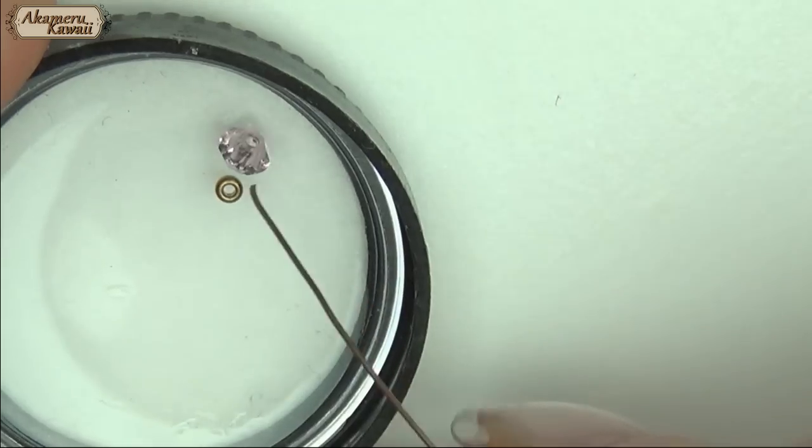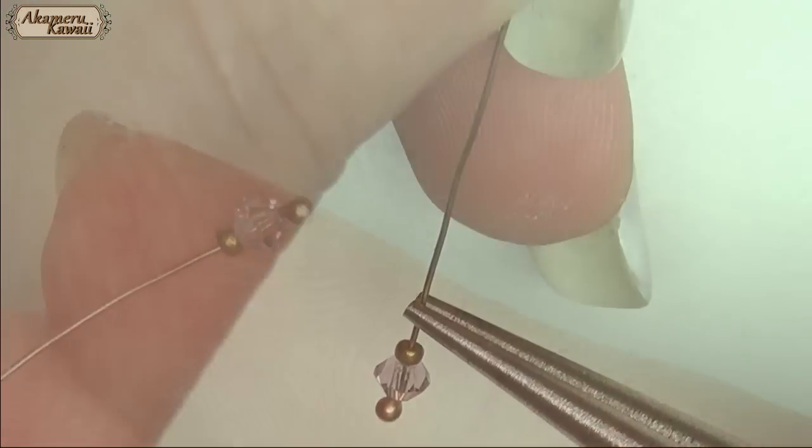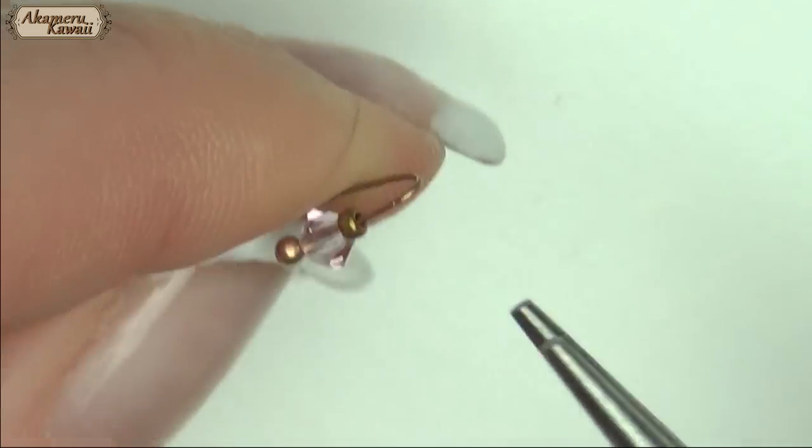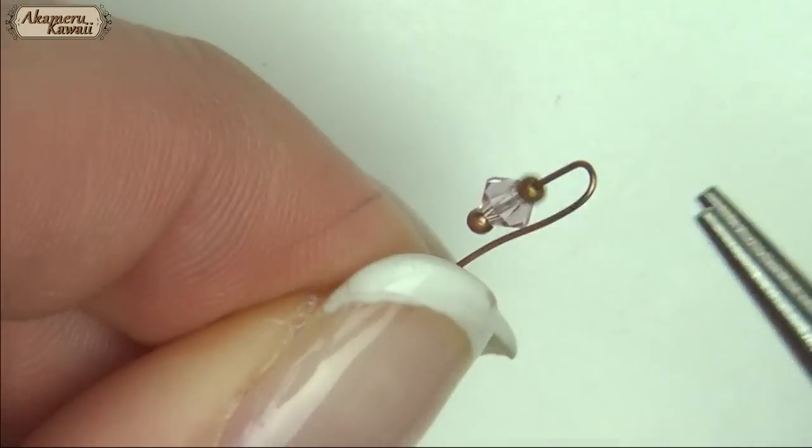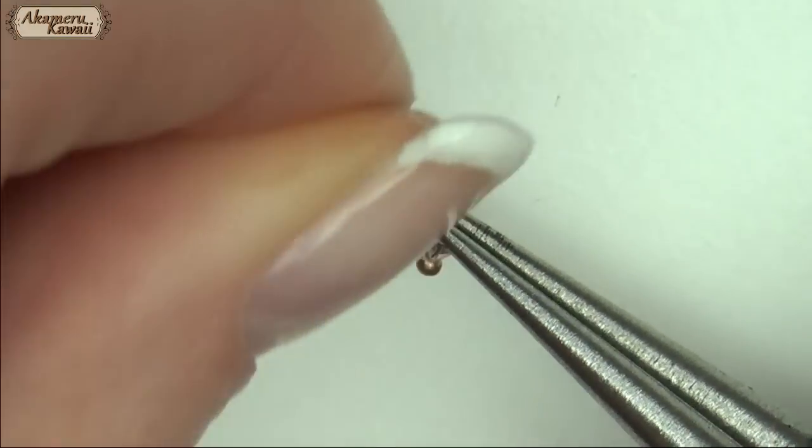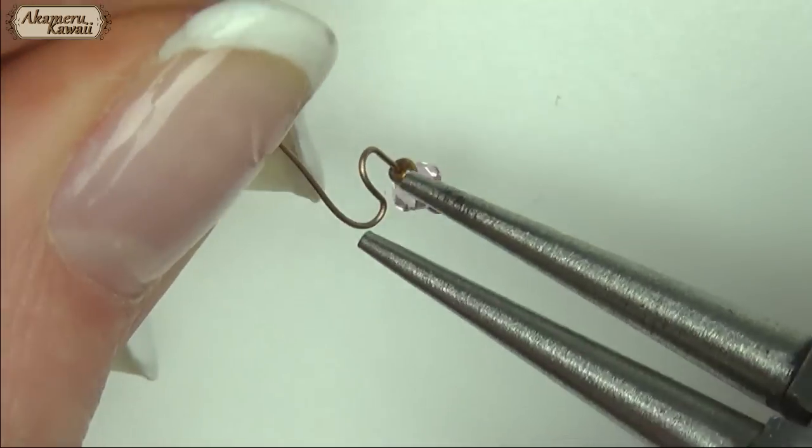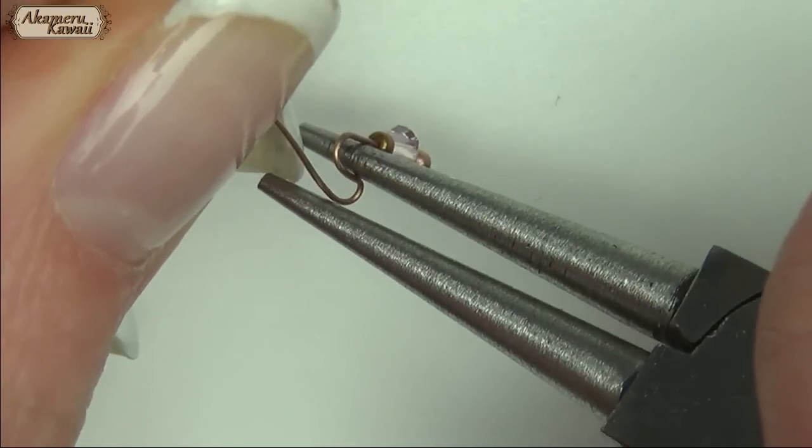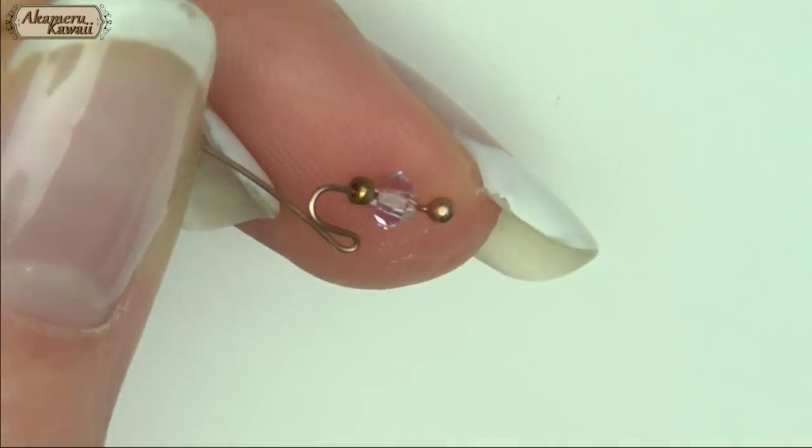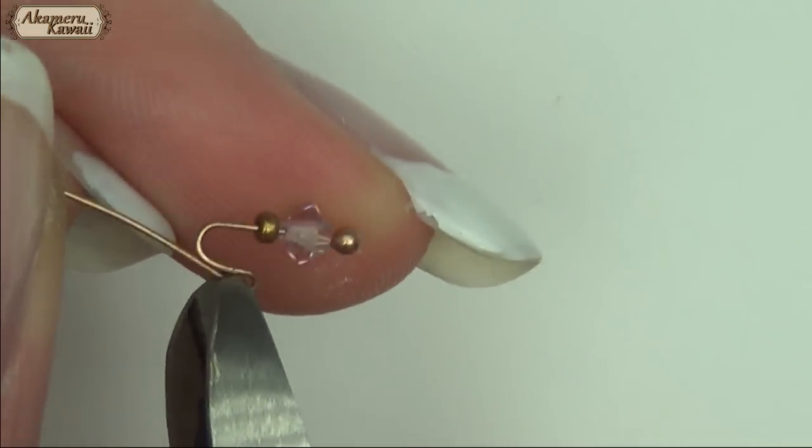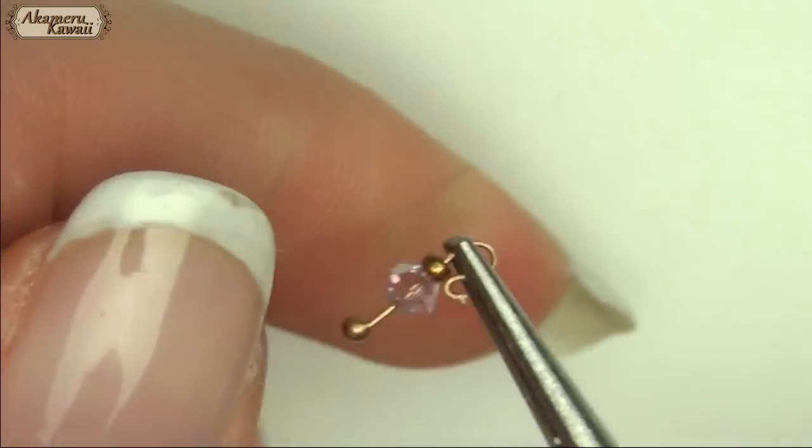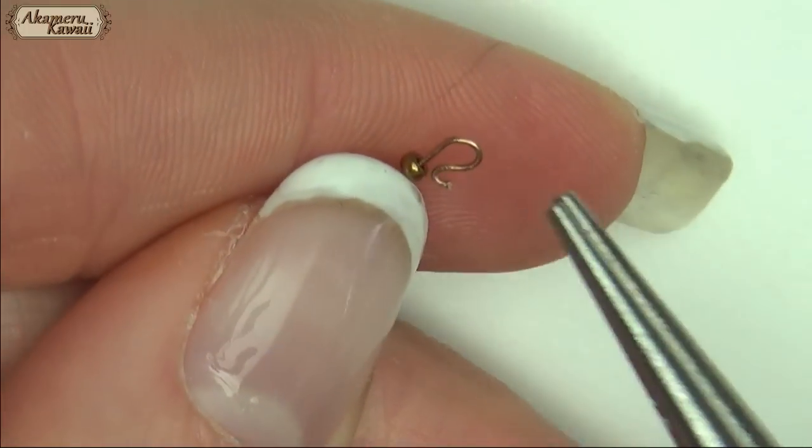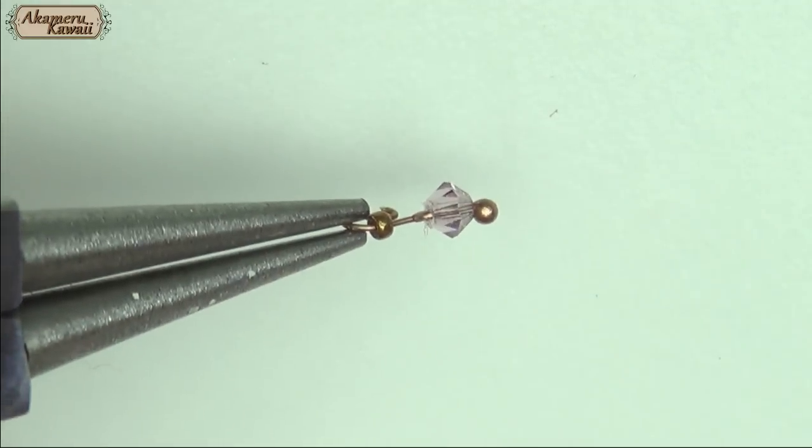To make earrings, I used a head pin and two beads—a Swarovski and a seed bead—and threaded them on. Then I used pliers to bend the wire to make the hook shape. Add a drop of glue to keep the beads from sliding around.